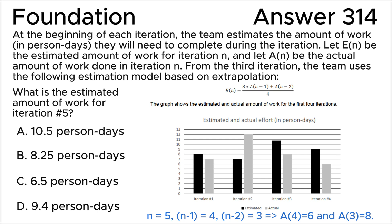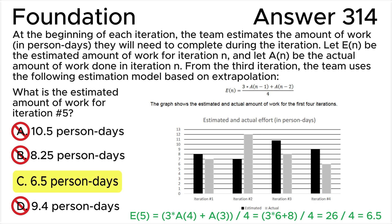Pay attention to the last two gray boxes: A(4) = 6 and A(3) = 8. From the formula we obtain E(5) = (3 × A(4) + A(3)) / 4 = (3 × 6 + 8) / 4 = 26 / 4 = 6.5 person-days. This means the correct answer is C.